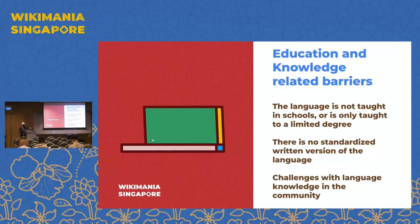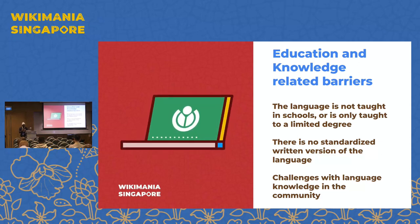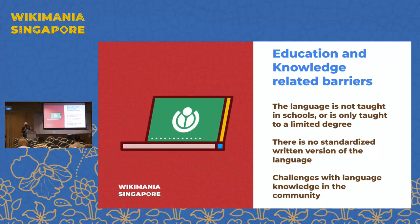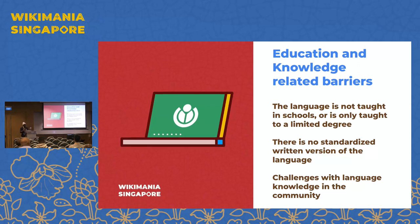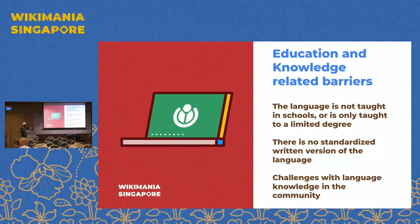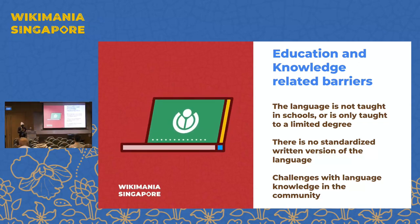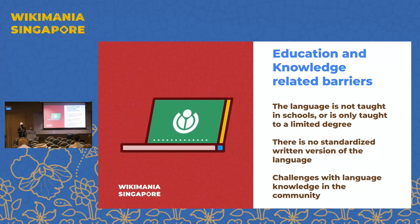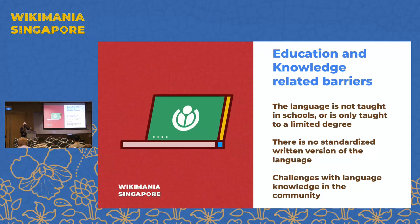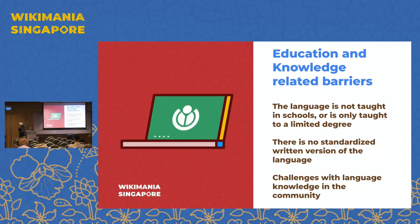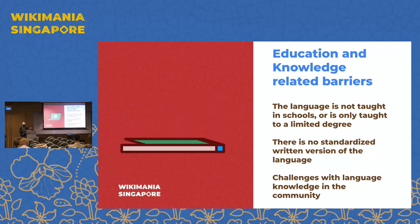We talked about education and knowledge-related barriers. We discovered that the language is not taught in schools — most of the languages we engaged, like Dagbani, are not taught in schools, even though it's one of the government-sponsored languages. There's also no rich online resources for teachers or students who want to teach Dagbani in schools. In Ghana, we engaged the Dagbani community and also the Groening community. There's also no standardized written version of the language, which is very challenging for most people to continue contributing to Wikipedia, along with limitations in what resources they can get to contribute in their various languages.